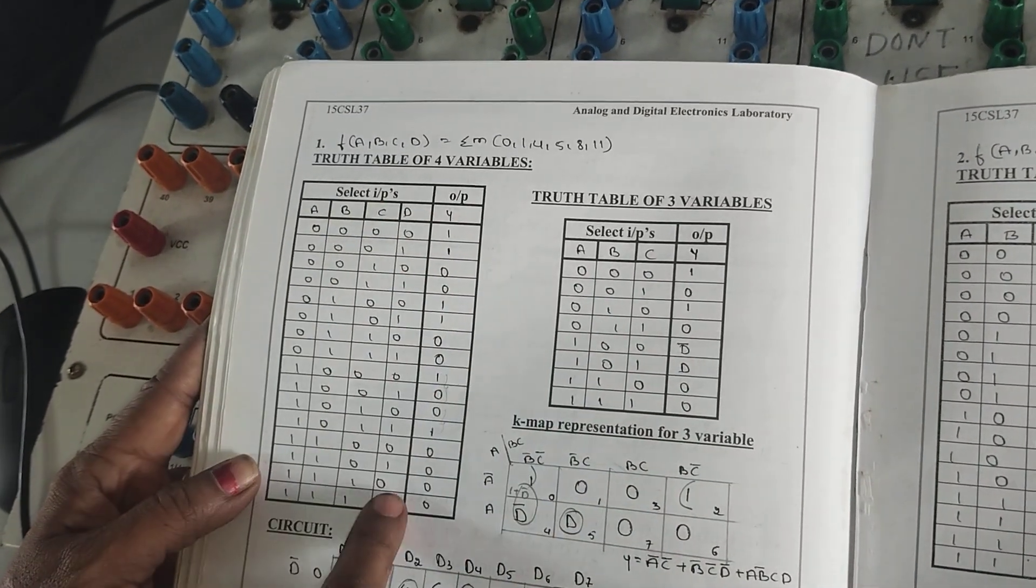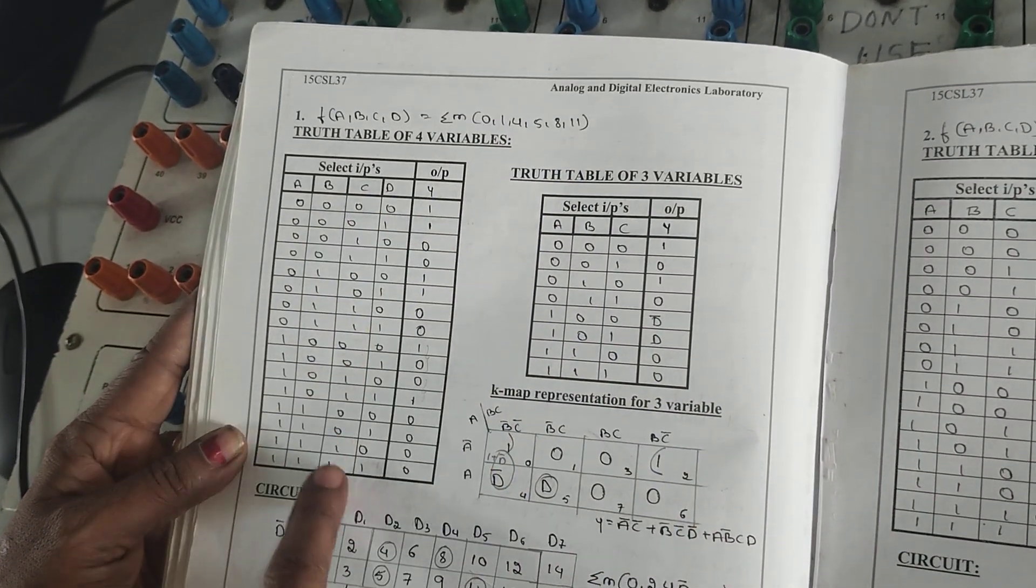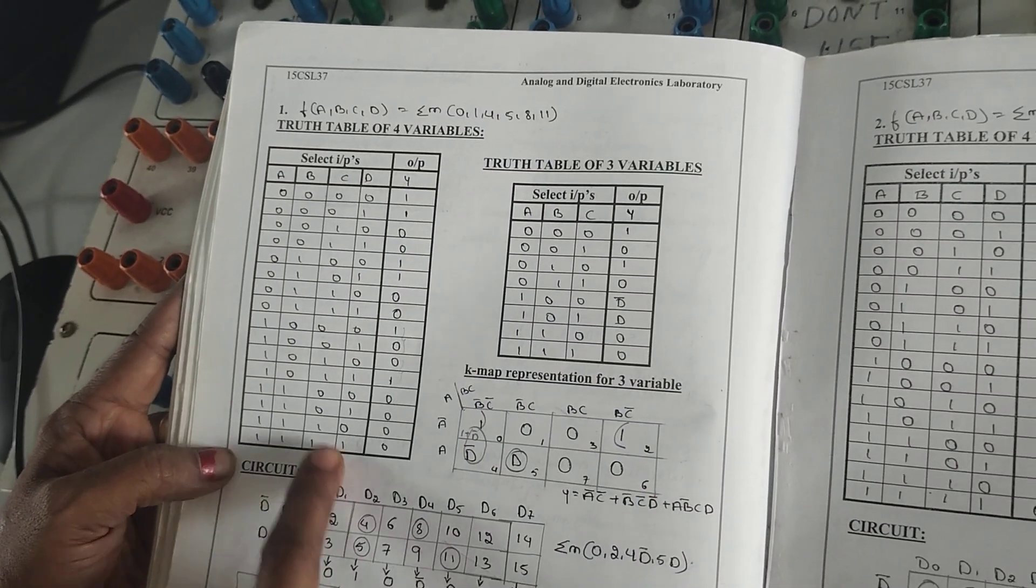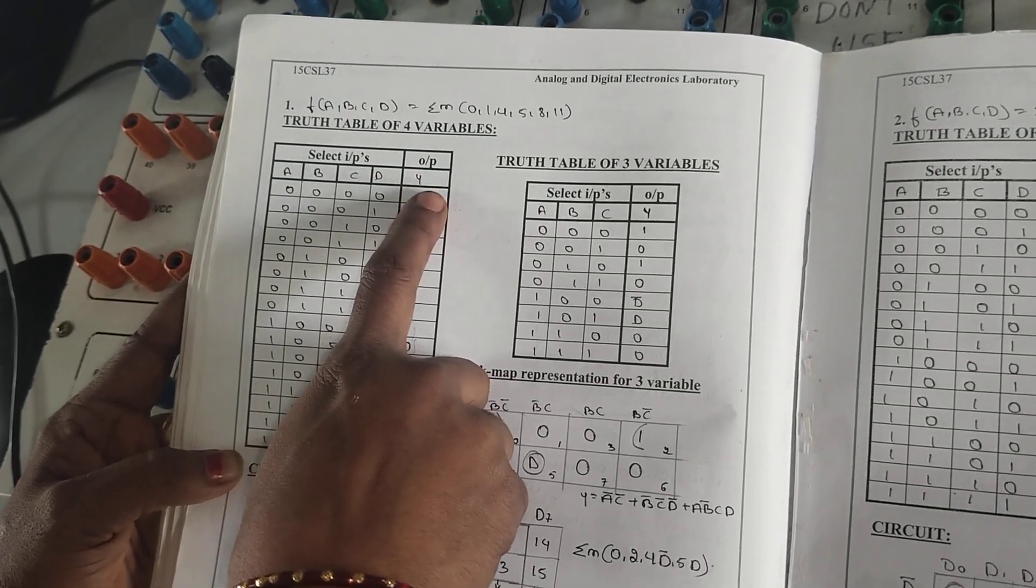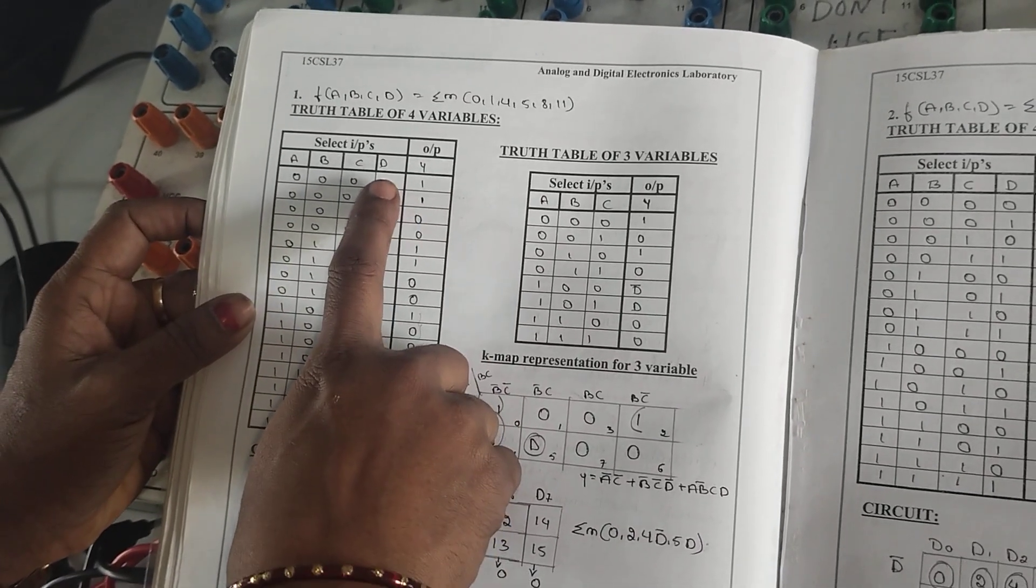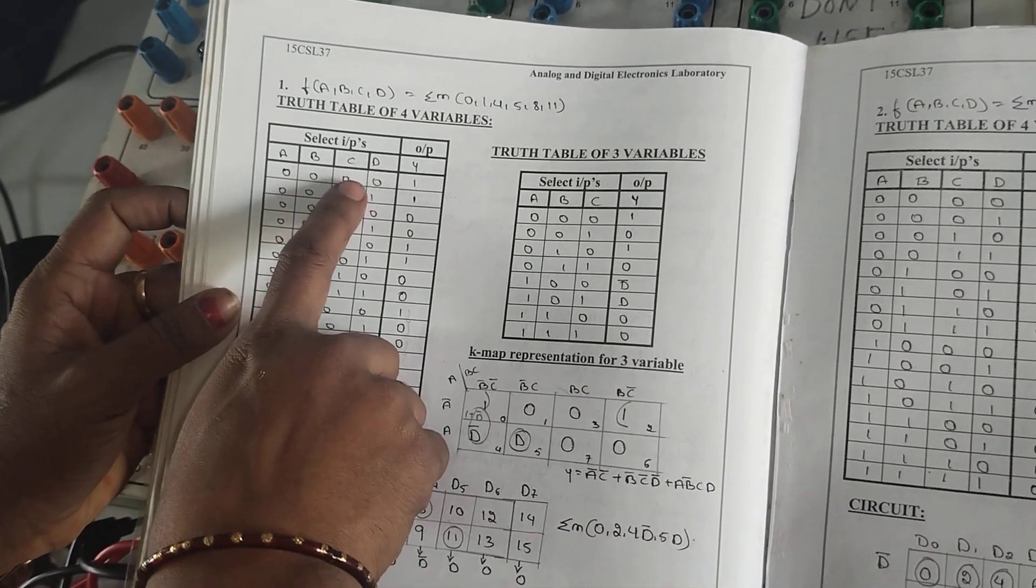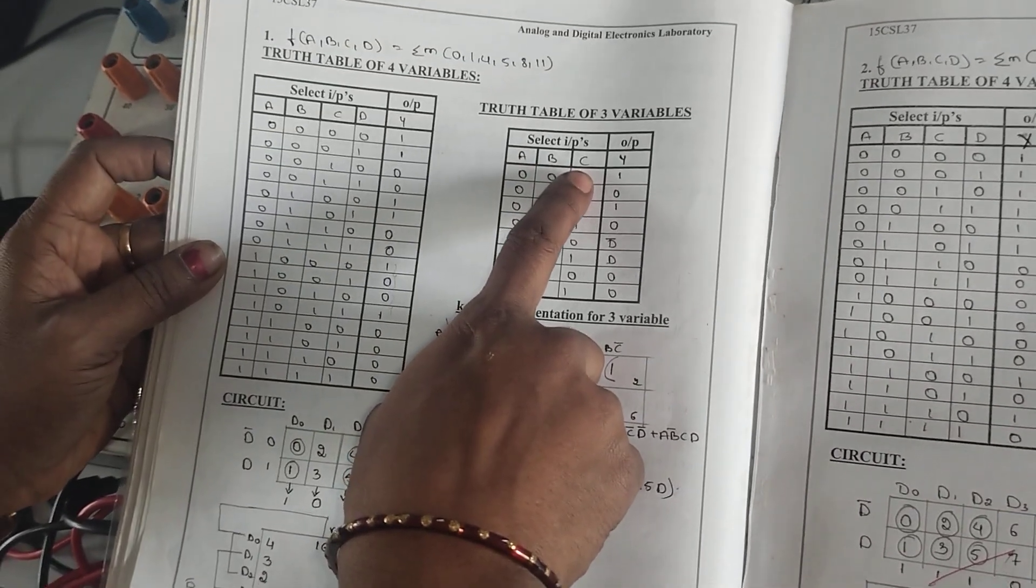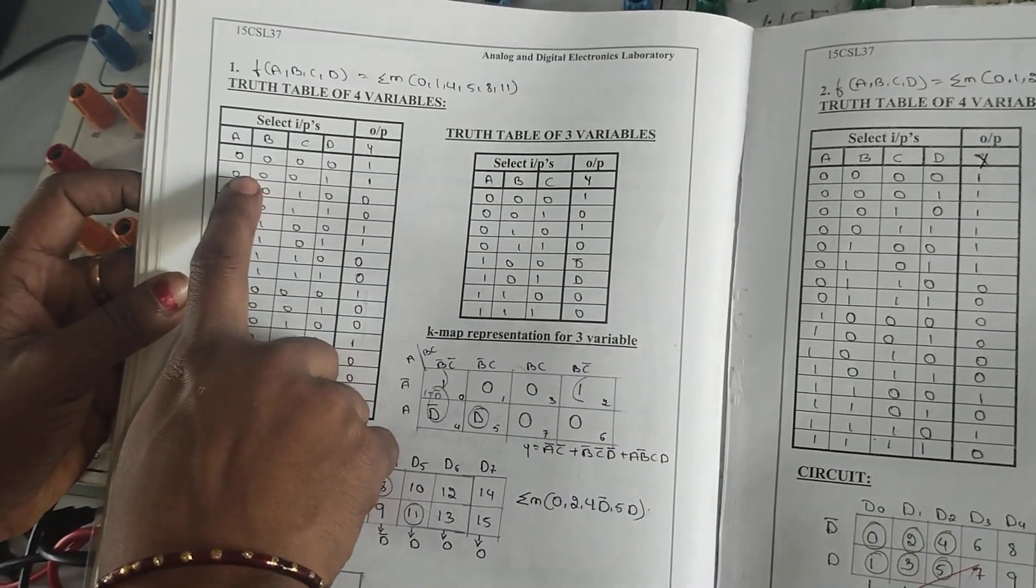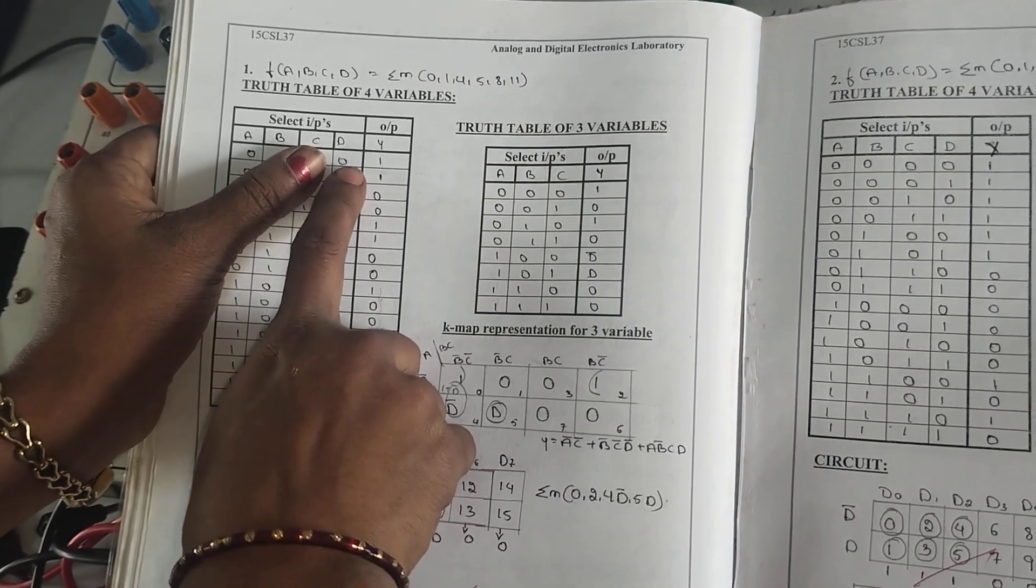We already know how to reduce the truth table. So any Boolean expression is provided, I need to construct a 4-variable truth table. Then I need to express one of the inputs using the output expression. Because of that, I have to consider D as my output and ABC as inputs. So 0, 0, 0, 0, 0, 0 - I need to compare them with the output and the D value.